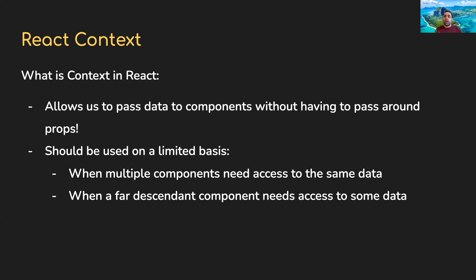We've been building small applications, but production-grade applications can have dozens or hundreds of components. When a lot of them need the same data, instead of passing props down to every single component that needs it, you create a context object. Any component that needs that particular piece of data can just reach into that context and get it, without relying on props.